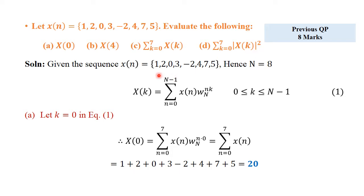Now let us get into the solution. There is no need to calculate the DFT directly at all instances. Wherever required we apply that, and in most cases the properties of the DFT are utilized. From the given sequence x(n) we can identify the length N = 8. The DFT formula is: X(k) = summation n=0 to N-1 of x(n) · W_N^(nk), for all k from 0 to N-1.